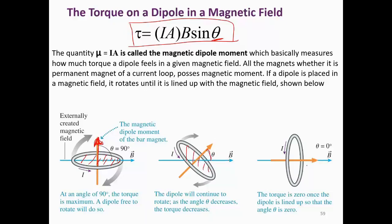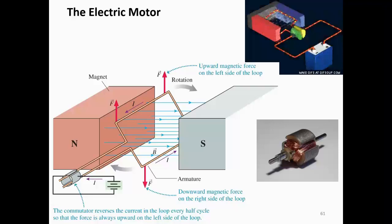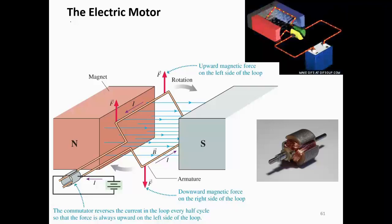If the magnetic field is parallel to the coil's orientation — that is, parallel to the plane of the coil — then the torque will be zero, because the area vector would be perpendicular to the field, making sinθ = 0. This is the equilibrium position.